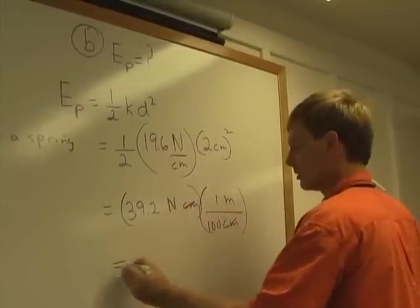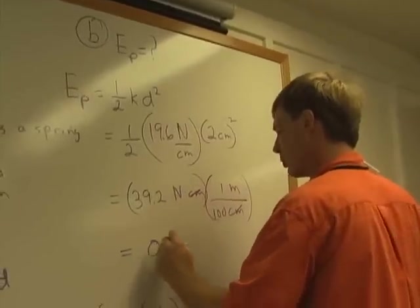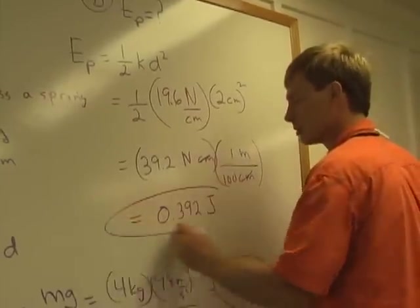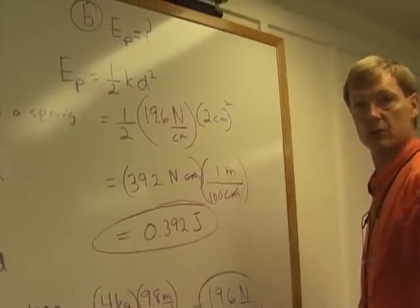Centimeters cancel. And so I got 0.392 newton meters, which is a joule. So about 4 tenths of a joule.